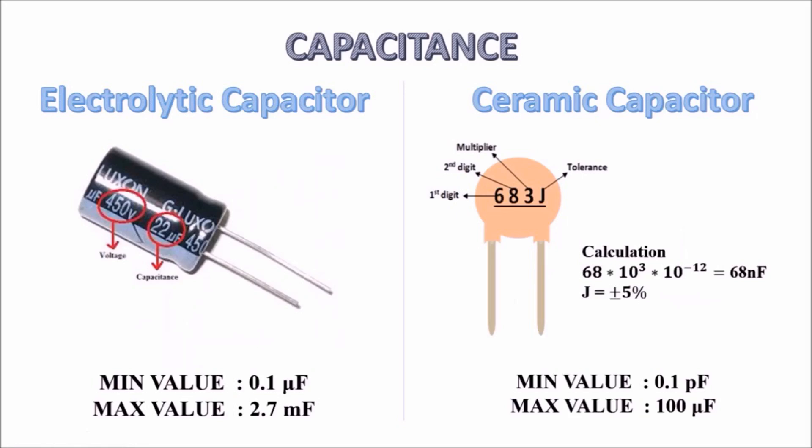A capacitor is an electronic component that stores and releases electrical energy. It consists of two conductive plates separated by an insulating material called a dielectric. When a voltage is applied across the plates, a charge builds up on the plates, creating an electric field between them.